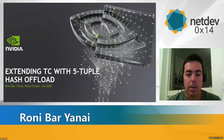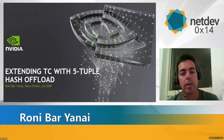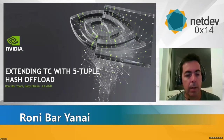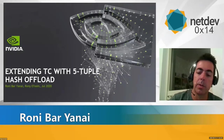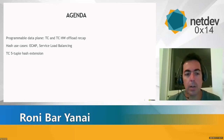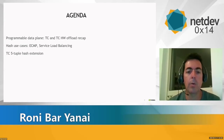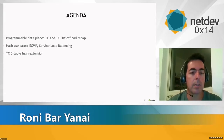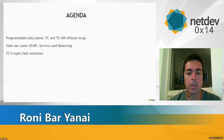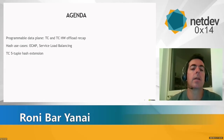The next presenter is Ronnie Bayanay from NVIDIA, presenting an idea to extend TC with 5-tuple hash offload, work done with Ronnie Ephraim and Ariel Levkovich. The talk will cover programmable data plane concepts, how TC can implement a programmable data plane, TC hardware offload recap, ECMP hashing use cases, and the challenge of synchronizing hardware and software hashes.